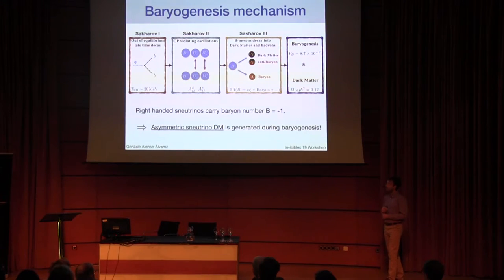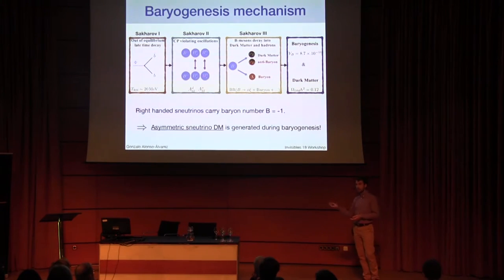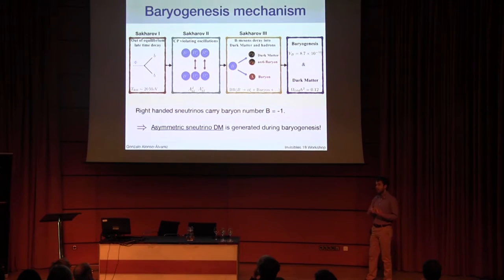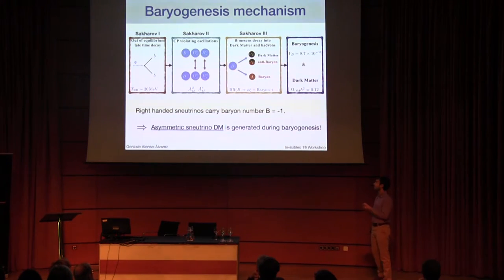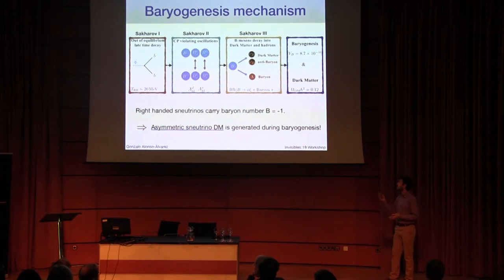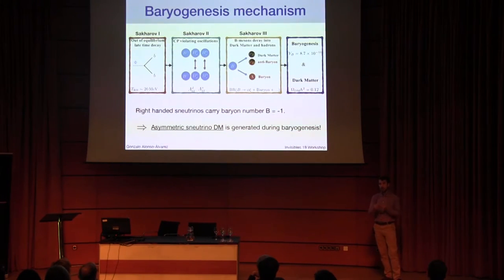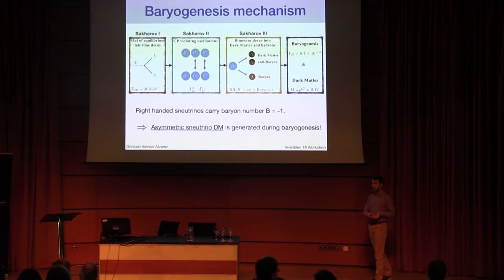What's interesting is that right-handed neutrinos, because of the charge assignments, have baryon number minus one, so we can identify these dark baryons with the right-handed neutrinos — they have all the suitable quantum numbers for this decay to happen. So, on top of baryogenesis, asymmetric right-handed neutrino dark matter is being produced.